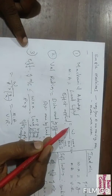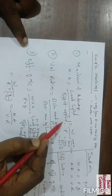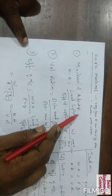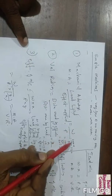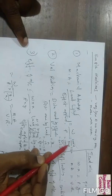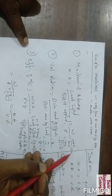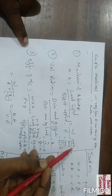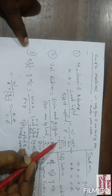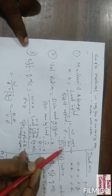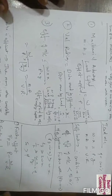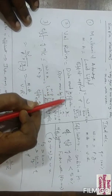Mechanical advantage is the ratio of load lifted to the effort applied. Load is W and effort is P, so mechanical advantage equals W by P. For example, if you want to lift a 1000 Newton load with 50 Newtons of effort, the mechanical advantage is 1000 by 50, which equals 20. If we lift the same 1000 Newtons with 10 Newtons of effort, the mechanical advantage increases to 100.